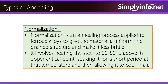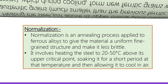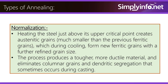Normalization is an annealing process applied to ferrous alloys to give the material a uniform fine-grained structure and make it less brittle. It involves heating the steel to 20 to 50 degrees Celsius above its upper critical point, soaking it for a short period at that temperature, and then allowing it to cool in air. Heating the steel just above its upper critical point creates austenitic grains much smaller than the previous ferritic grains, which during cooling form new ferritic grains with a further refined grain size. The process produces a tougher, more ductile material and eliminates columnar grains and dendritic segregation that sometimes occurs during casting.